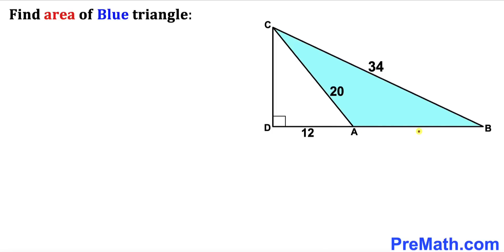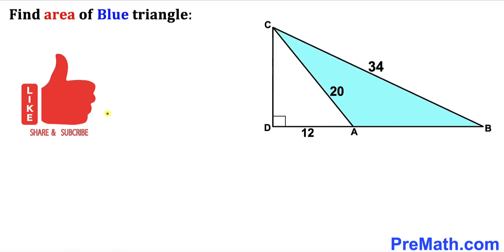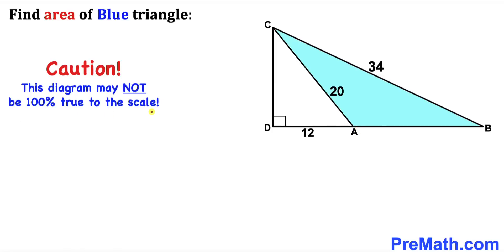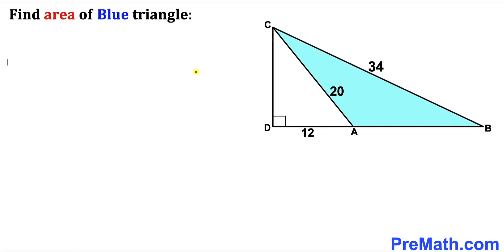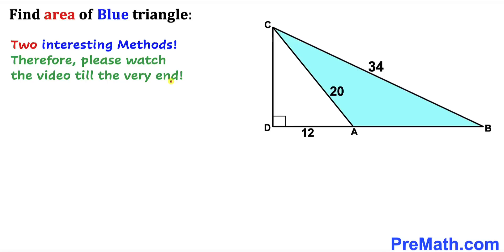Welcome to Pre-Math. In this video we have a right triangle BDC where side length BC is 34, side length AC is 20, and side length AD is 12 units. We are going to calculate the area of the blue shaded triangle ABC. Note that this figure may not be 100% true to scale. I'm going to share two slightly different approaches, so please watch till the very end.